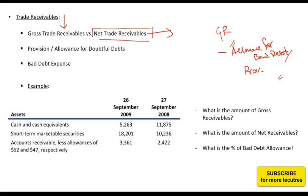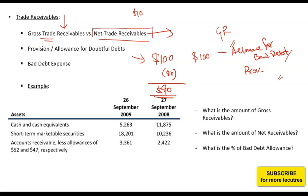Over time, the provision will continue to increase as you book more allowance. For example, if your customer receivables are $100 and you think $10 will not be recovered, you book $10 as provision and your net receivables are $90. In the next year, if you think an additional $5 may default — bringing total expected loss to $15 — you book $5 more, and your net receivables become $85.